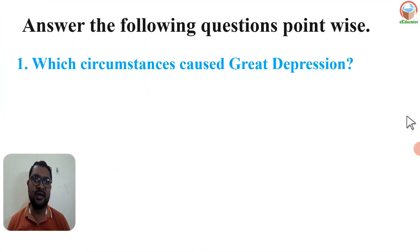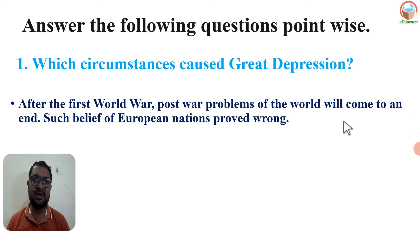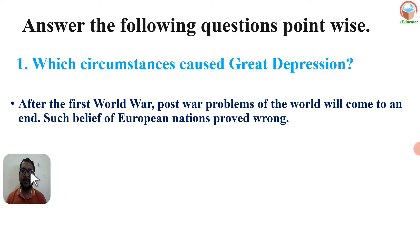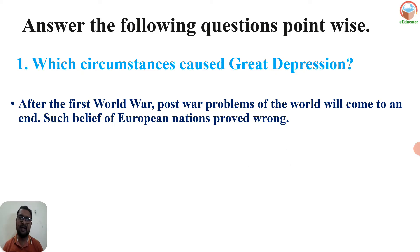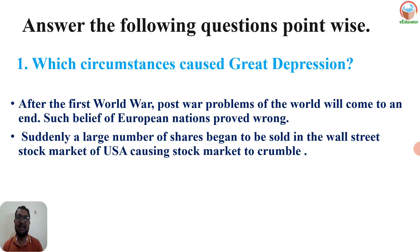Answer the following question point-wise — long answer (a): Which circumstances caused the Great Depression? After the First World War, European nations believed post-war problems would end, but that proved wrong. Suddenly, a large number of shares began to be sold in the Wall Street stock exchange market of the USA in New York.